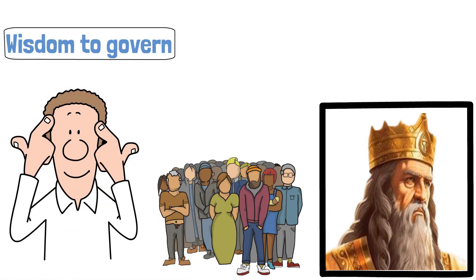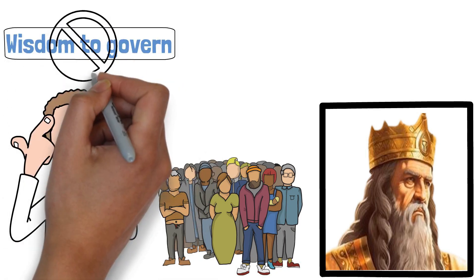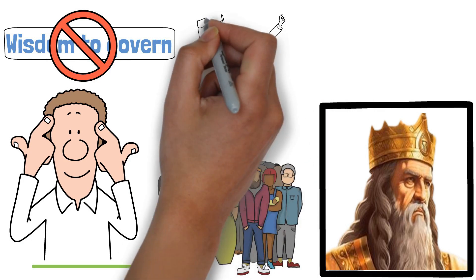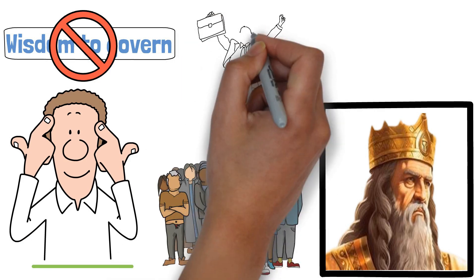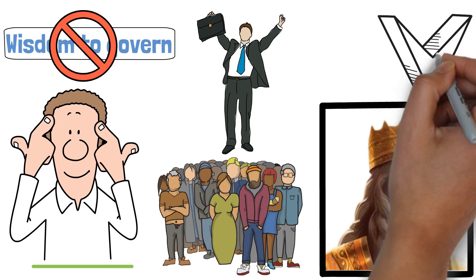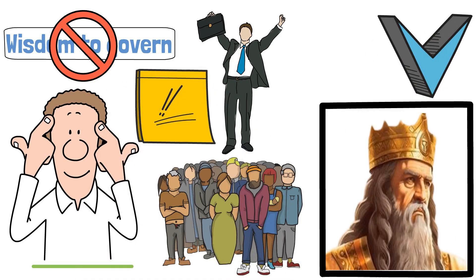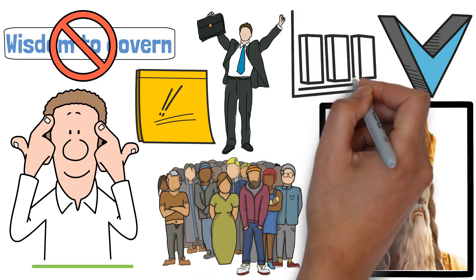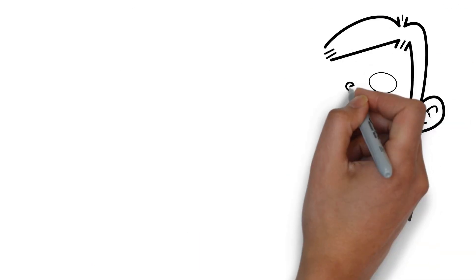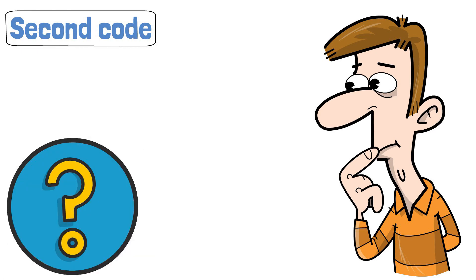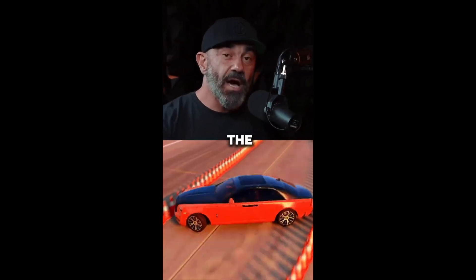So, the first code, wisdom to govern, isn't just about acquiring knowledge. It's about using that wisdom to navigate the complexities of leadership, ensuring not only personal success, but also the prosperity of an entire kingdom. As we unravel Solomon's story, remember that accessing this code requires a continuous pursuit of wisdom and discernment, an unwavering commitment to making decisions that resonate with the greater good. Now, let's move on to the second code and explore how taking action plays a pivotal role in unlocking the doors to prosperity.